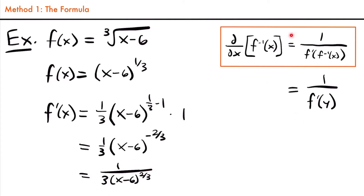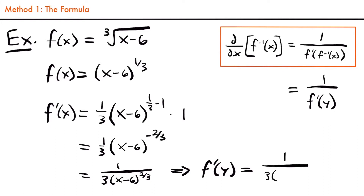Now we have the derivative of our function. But in our formula, we need the derivative of our function evaluated at y, or at our inverse function. So let's plug y into this derivative — we're just changing x to y. So we'll have f prime of y equals one divided by three times y minus six to the two-thirds power.